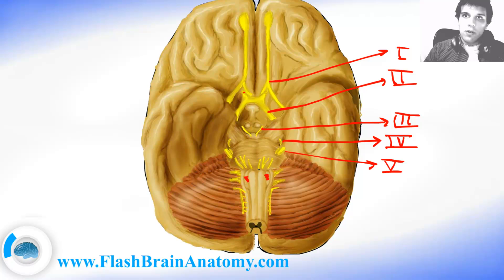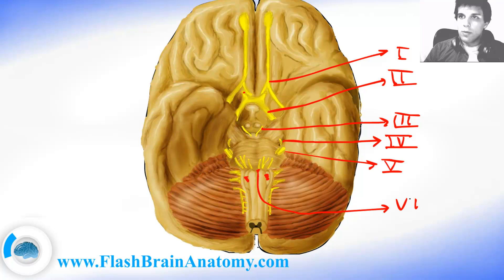Cranial nerve number six is called the abducens. The abducens innervates the lateral rectus muscle on the eyeball.